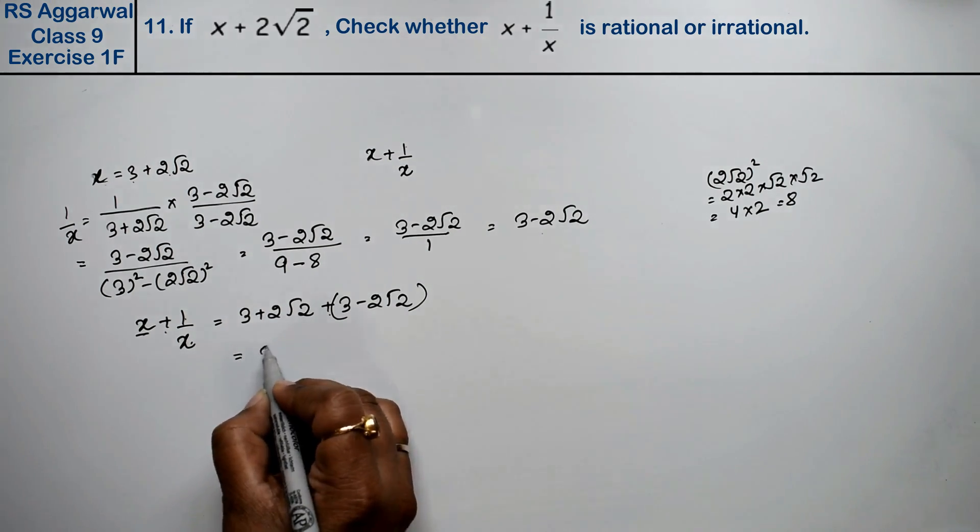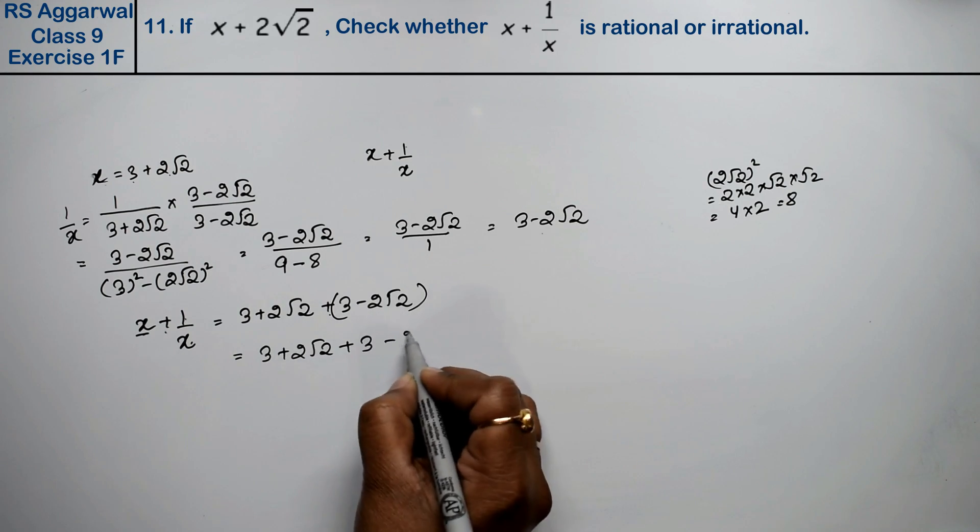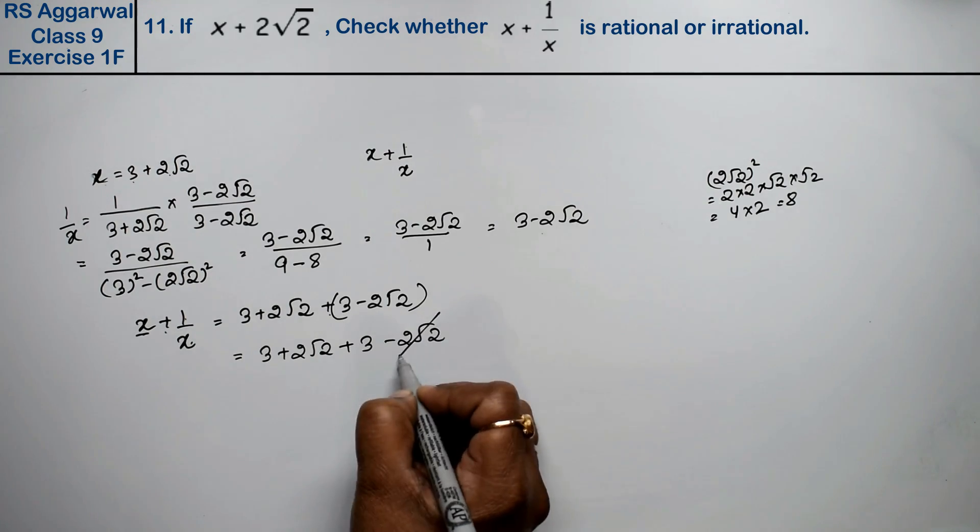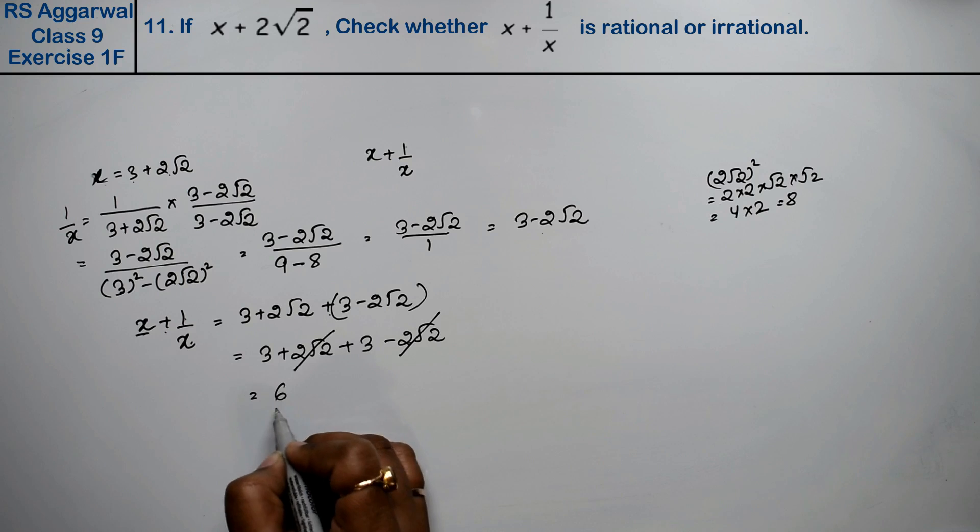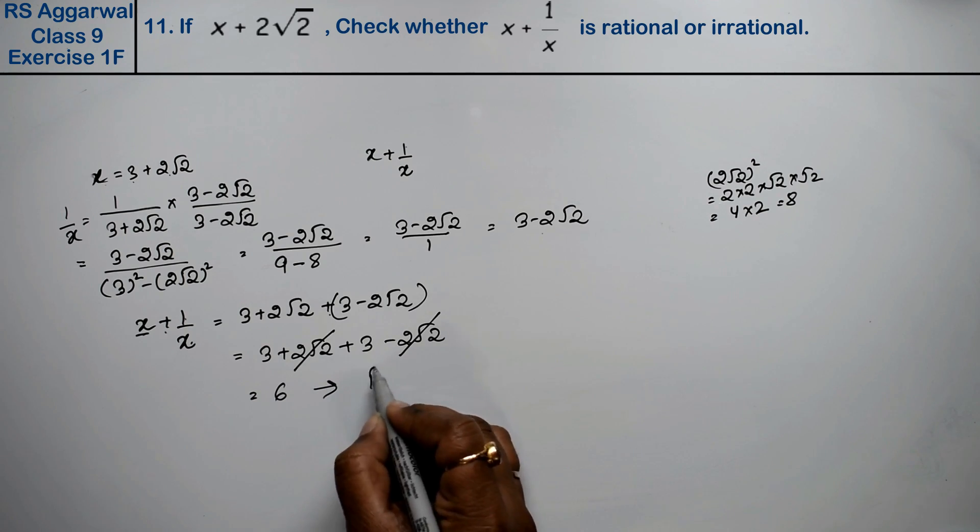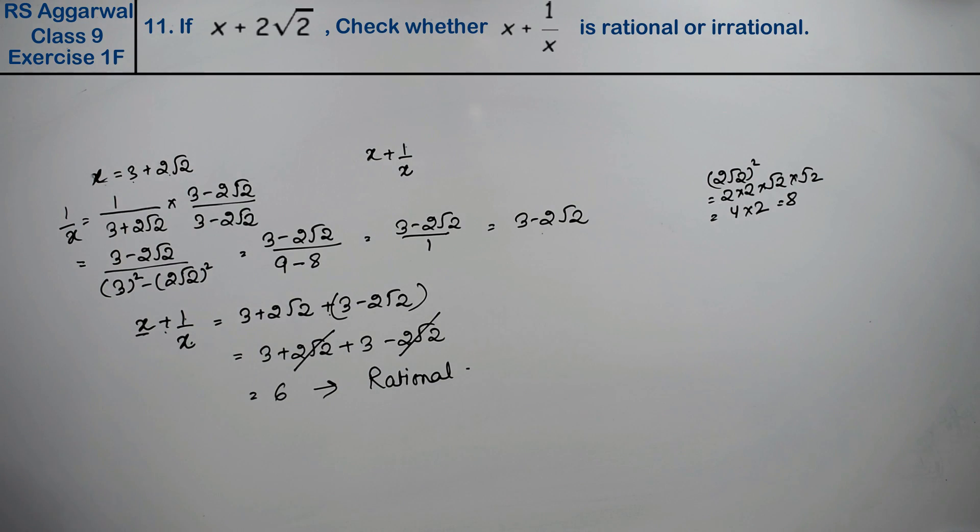Now we will solve this. We will open brackets: 3 plus 2 root 2 plus 3 minus 2 root 2. Now minus and plus cancel, so 3 plus 3 is 6. So what happened? Rational number. The value is rational.